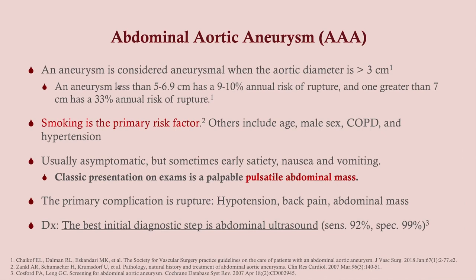Triple-A — abdominal aortic aneurysm — is an aneurysm of the abdominal aorta. At 5–7 cm there's about a 10% rupture risk; above 7 cm there's a one-in-three annual rupture risk — it gets worse the bigger it gets. The primary risk factor is smoking — that's a classic Step 3 question: what's the number one thing this patient can do to reduce their risk? Other risk factors include age, male sex, COPD, and hypertension. It's usually asymptomatic, but classically presents with a palpable pulsatile abdominal mass, though this is hard to detect in overweight patients.